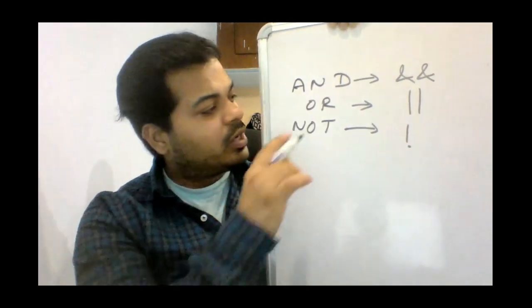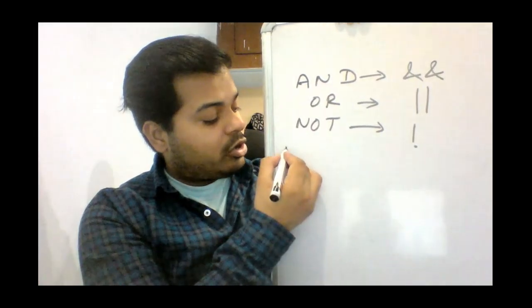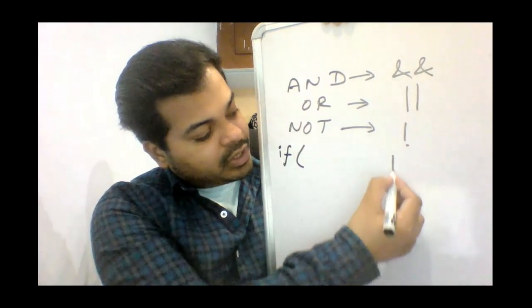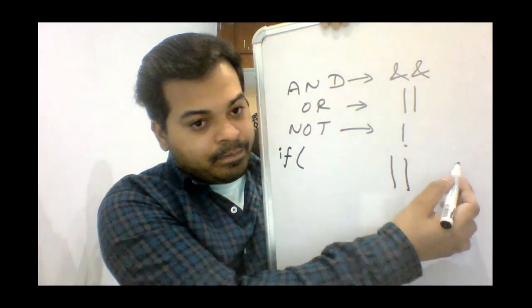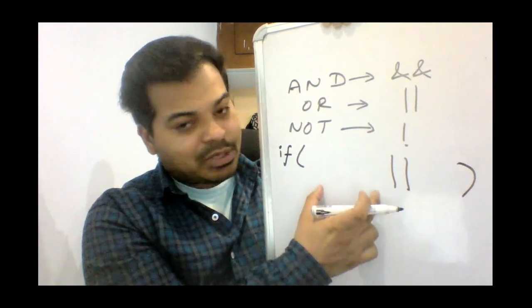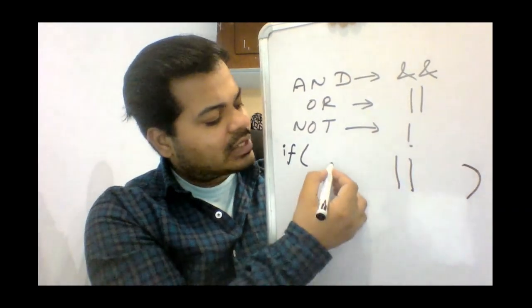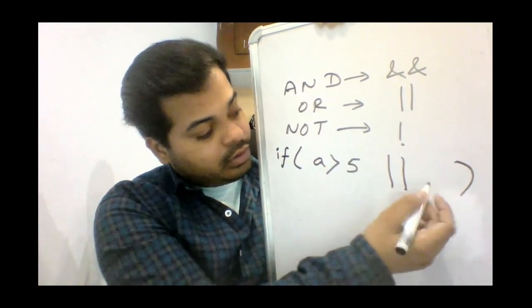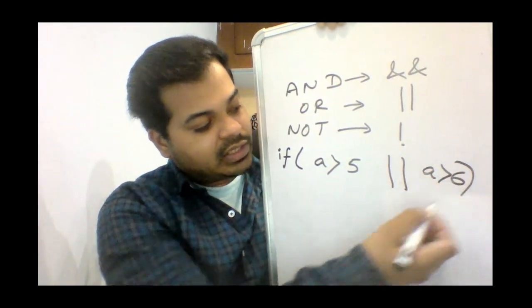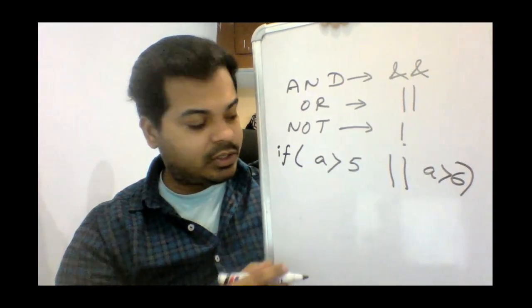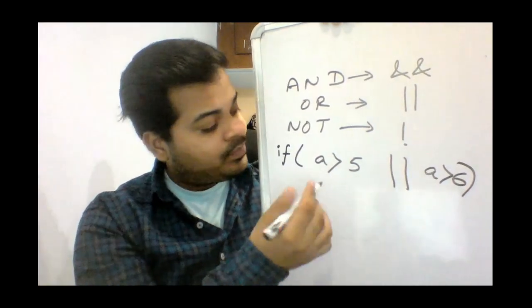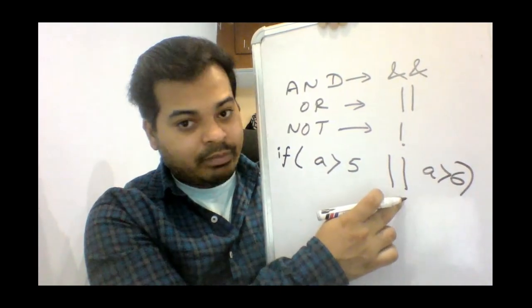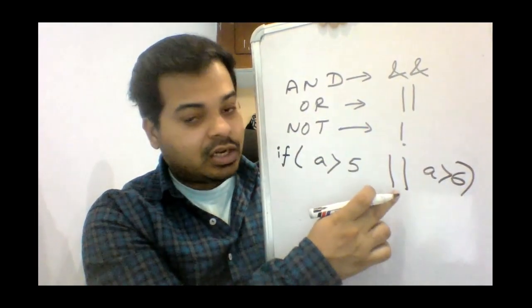Now let's talk about the OR operator. In the OR operator you write your if statement, then the OR operator — double pipeline (||) — and then your two expressions. For example, if a is greater than 5 OR a is greater than 6. This is one expression, and that is the second expression, with the OR logical operator in between.